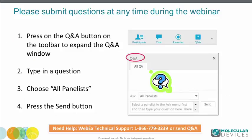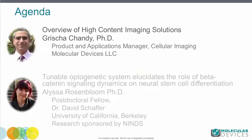Please submit questions at any time during the webinar. Press the Q&A button on the toolbar to expand the Q&A window, type questions into it, choose All Panelists from the Ask drop-down, and press Send. That way, all of us — Alyssa and myself — can see these questions at the same time. We will hold the questions and ask them verbally at the end of the webinar.